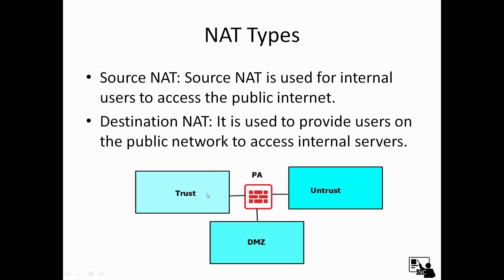For example, we have three zones — trust, untrust, and DMZ — and all are connected with the Palo Alto firewall. When we want to connect from trust to untrust, we have to do source NATing. In that case we are going to use a public IP address on the untrust interface. However, in the trust zone we will use only private IP addresses. So our source private IP address will be translated into this public IP address — that is called source NATing.